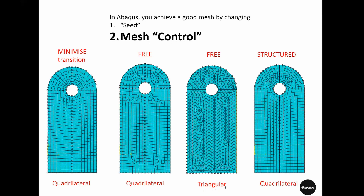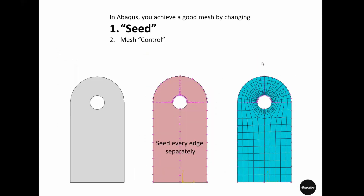In both those cases the elements were quadrilateral — each element had four sides. But in mesh control we can also define the elements to be triangular, meaning elements will have three sides. Here we have an example of free mesh with triangular elements. Finally, here we have defined quadrilateral elements with structured mesh control, but we did not get a nice result because we did not tick minimum transition. So it looks like using minimum transition is a good option to get a nice mesh, and the second good option is to use structured mesh.